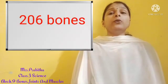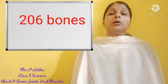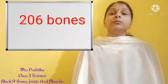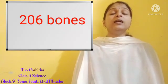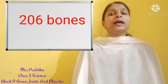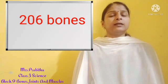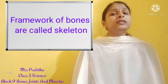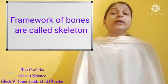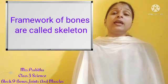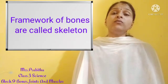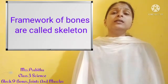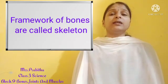Our body is made up of 206 bones. So how many bones are there in our body? 206 bones are there. All these bones together make a framework — a framework of bones.